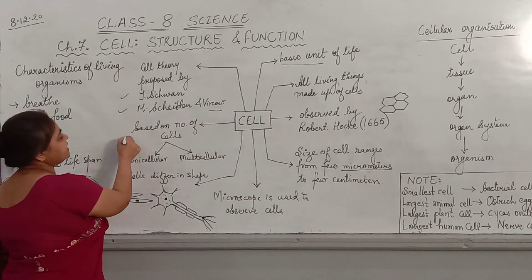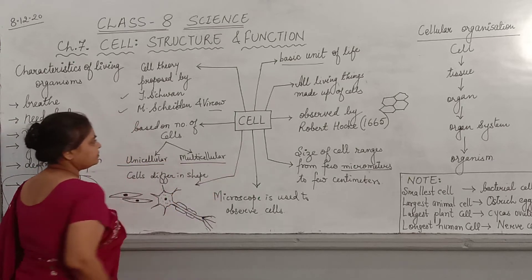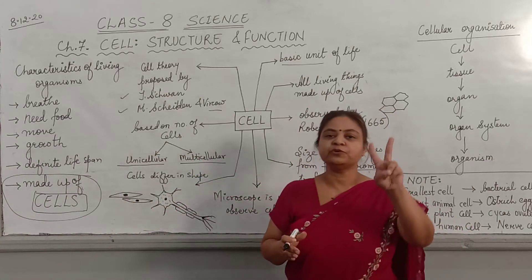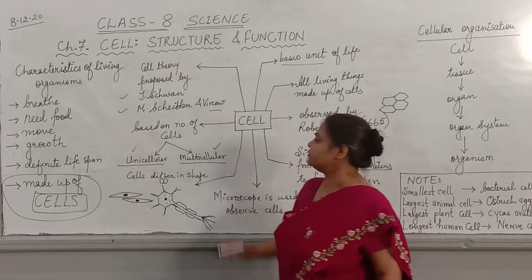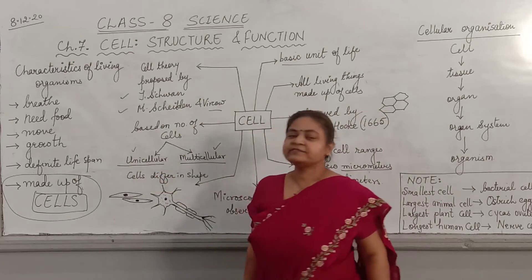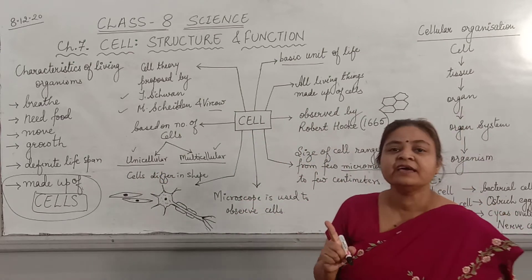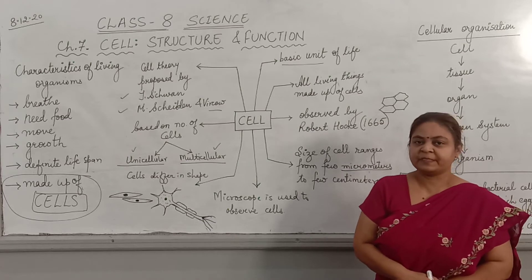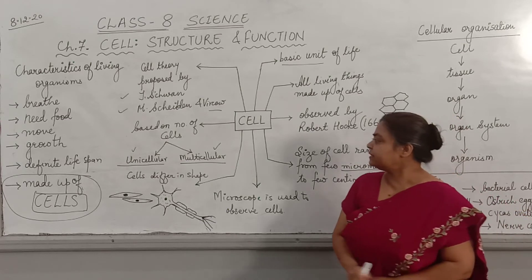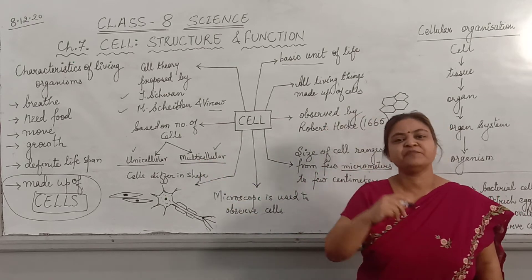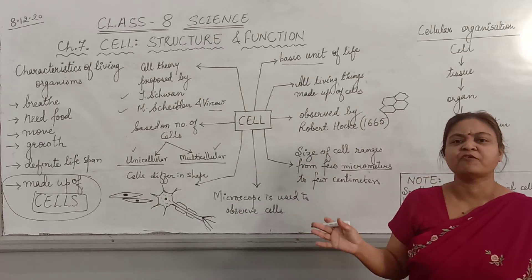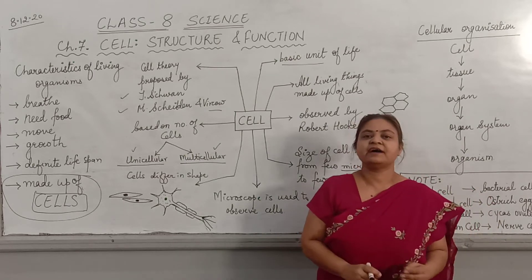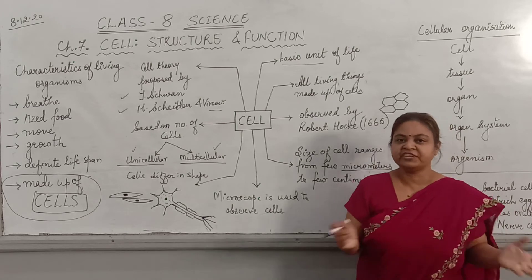Based on the number of cells, organisms can be classified into two categories: unicellular and multicellular. 'Uni' means one, so organisms whose body is made up of only one cell are known as unicellular organisms — like amoeba, which we studied last year. 'Multi' means many; those organisms whose body is made up of many cells are known as multicellular organisms. Human beings are a very good example — we have trillions of cells in our body.